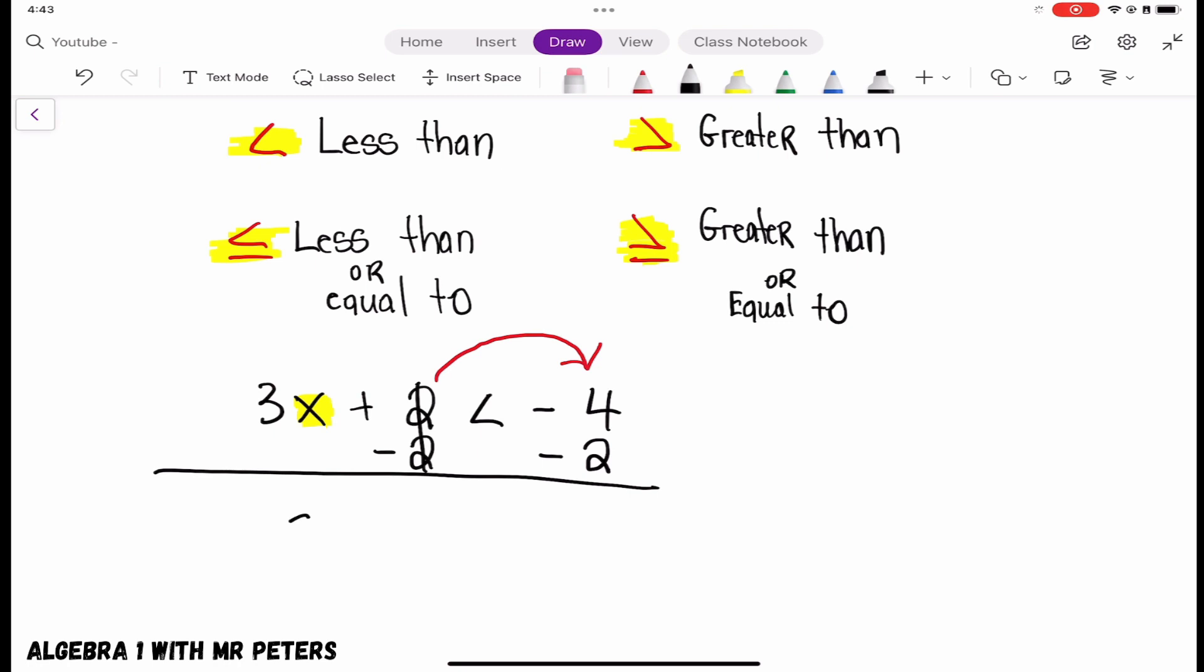So now we have 3x is less than negative 4 plus negative 2, which is negative 6. We added those like terms.